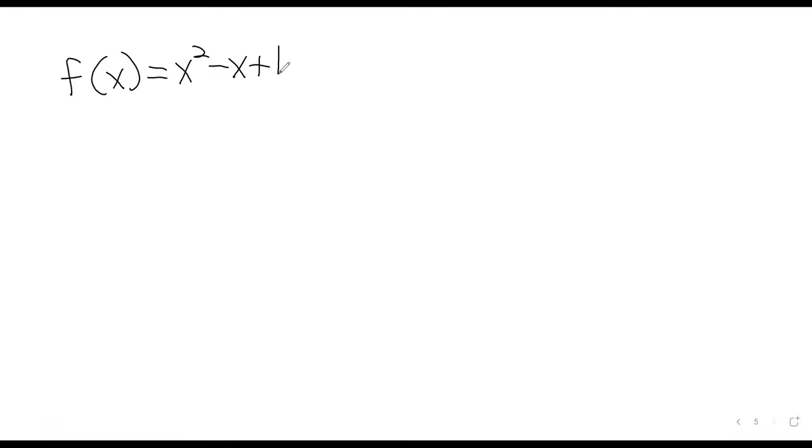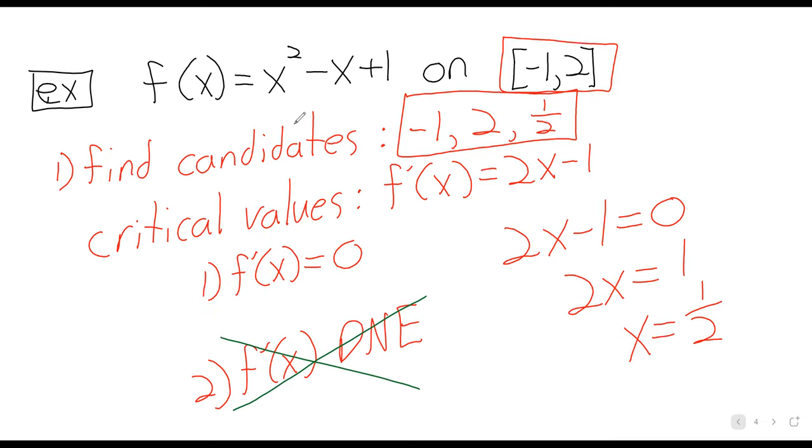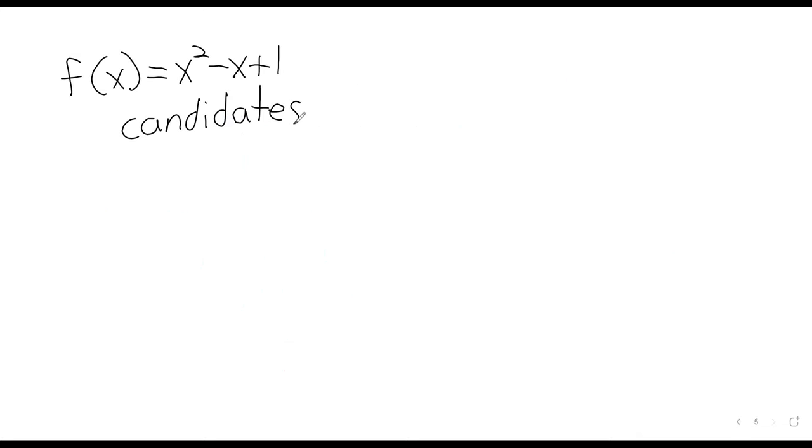That gives us three values that we need to test. We're going to be sticking our candidates into the original function f(x). We are not sticking them into the derivative f'(x). That's a mistake that I often see. So our candidates are: -1, 1/2, and 2.